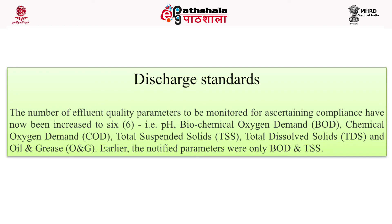Wastewater discharge standards have been made stricter, limiting discharge to 200 liters per ton of cane crushed, down from the earlier limit of 400 liters per ton. The number of effluent quality parameters to be monitored has been increased to six: pH, BOD, chemical oxygen demand (COD), total suspended solids, and total dissolved solids.